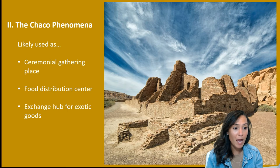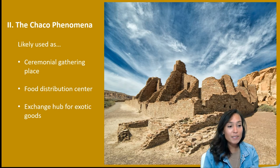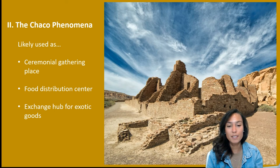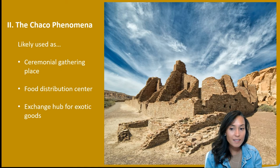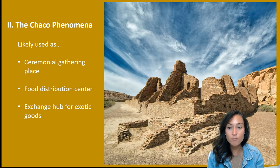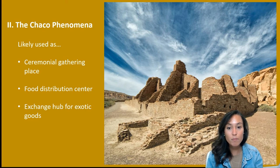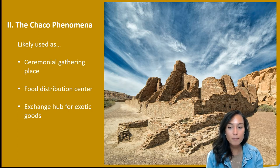So what was Chaco actually used for? Chaco was likely used as a ceremonial gathering place, a food distribution center, and an exchange hub for exotic goods. In the 1100s, new construction began to slow and its role as a regional center began to shift. By the 1200s, people were moving away from Chaco and migrating into new areas, eventually dispersing into much smaller settlements that make up the ancestral sites of contemporary Pueblo peoples.